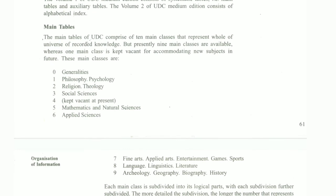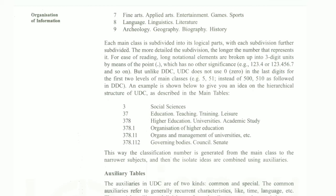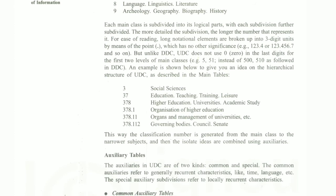The structure of the UDC Medium Edition Volume 1 consists of systematic tables — main tables and auxiliary tables. In the main table, you will see classes from Generalia to Geography, Biology, and History. The main class is further divided into logical parts, with each subdivision further subdivided. The longer the number, the more detail it represents. For example: main class 3 is Social Science; 37 is Education, Training; 378 is Higher Education, University, Academy.